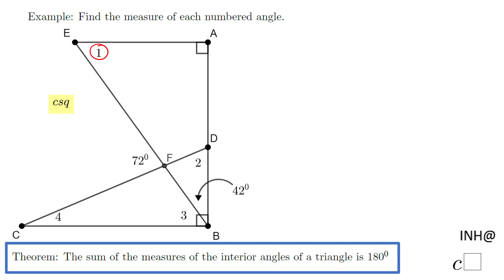If you notice, angle 1 belongs to this triangle EAB, so I'm going to do that here: triangle EAB. In that triangle, the sum of the measure of the interior angles is 180°. So I'm going to say the measure of angle 1 plus, in that triangle we have this angle A, and that is 90 degrees.